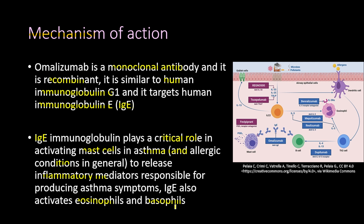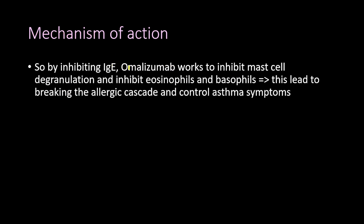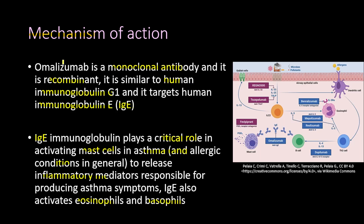IgE also activates eosinophils and basophils in asthma and other allergic conditions. Omalizumab works to inhibit IgE, which in turn inhibits mast cell degranulation and inhibits eosinophils and basophils. By doing this, omalizumab breaks the allergic cascade and controls asthma symptoms.